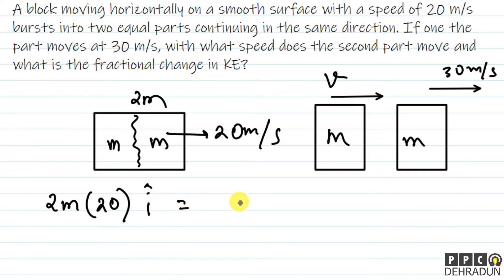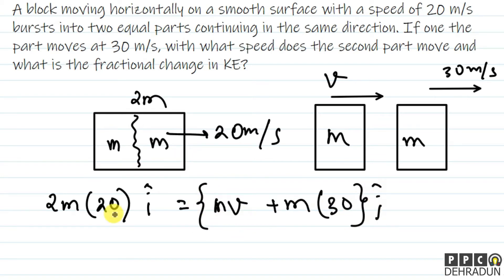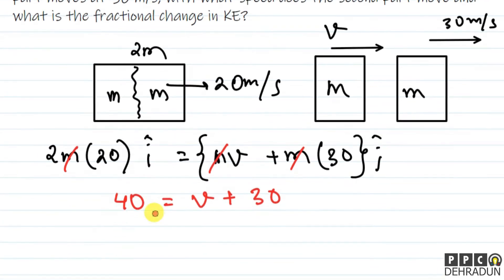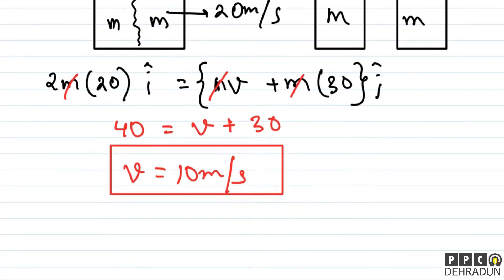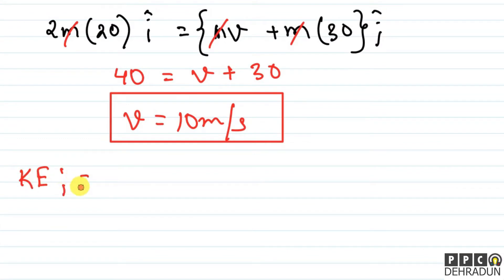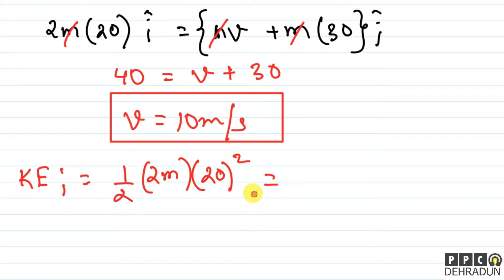Taking rightward as positive (i-cap direction): initial momentum = 2m × 20. This must equal final momentum = mv + m × 30. Cancelling m from both sides: 40 = v + 30, so v = 10 m/s. That's the answer to the first part — the second mass moves at 10 m/s.